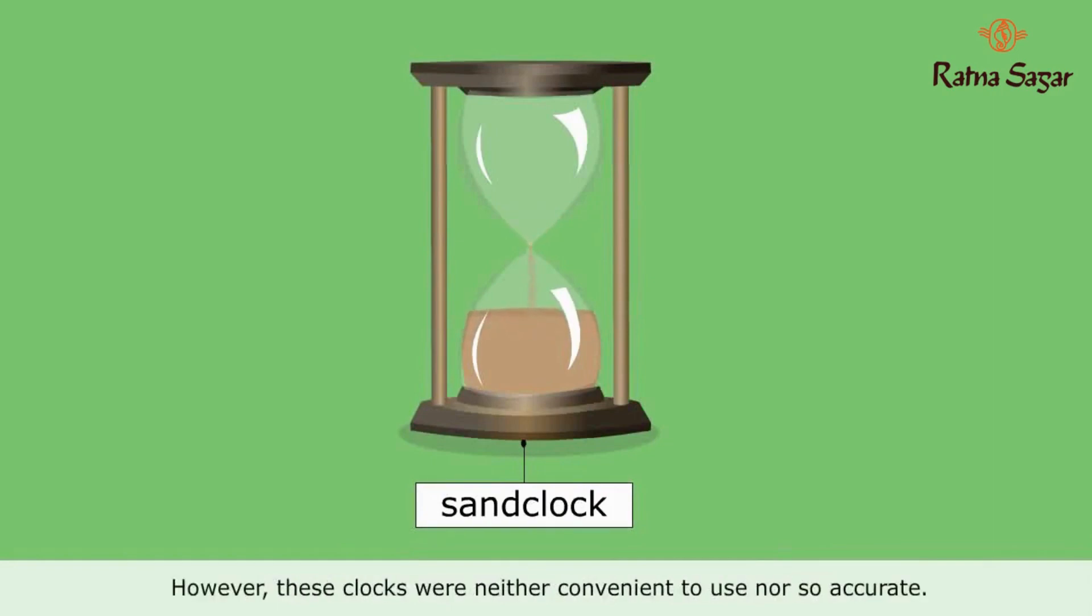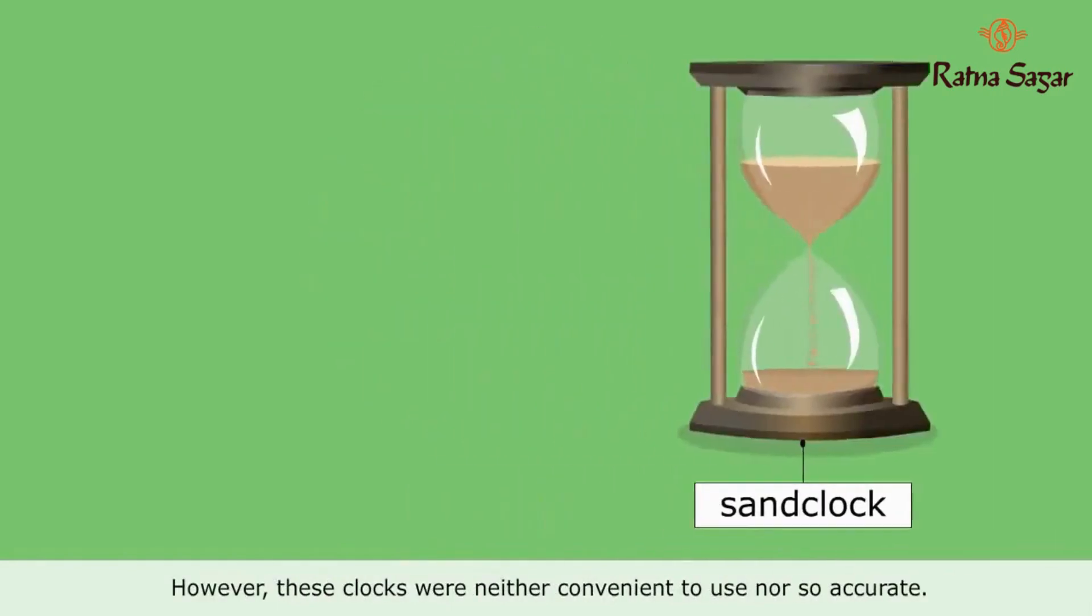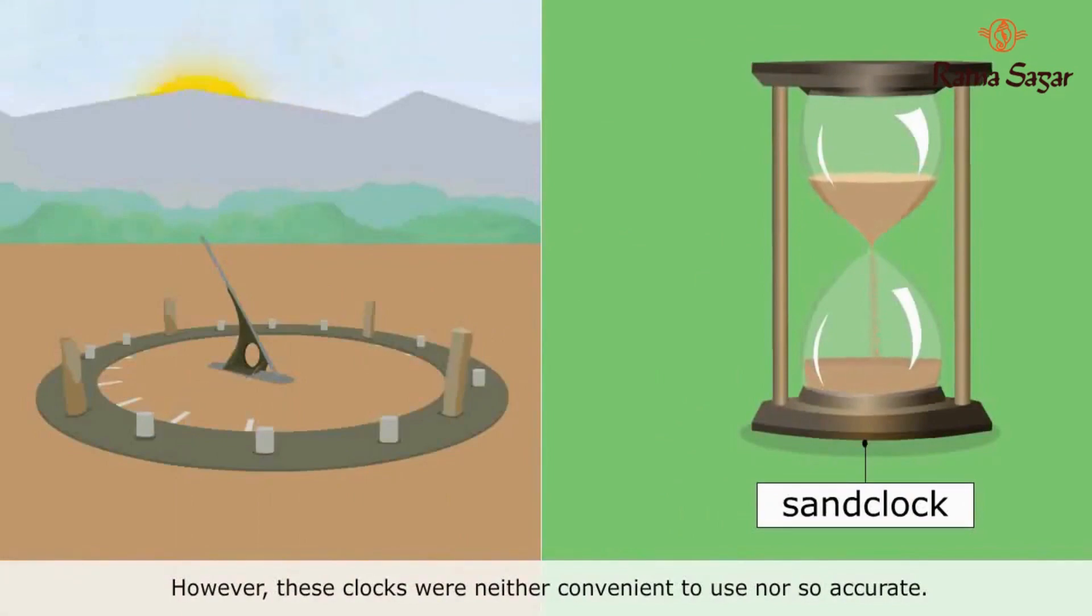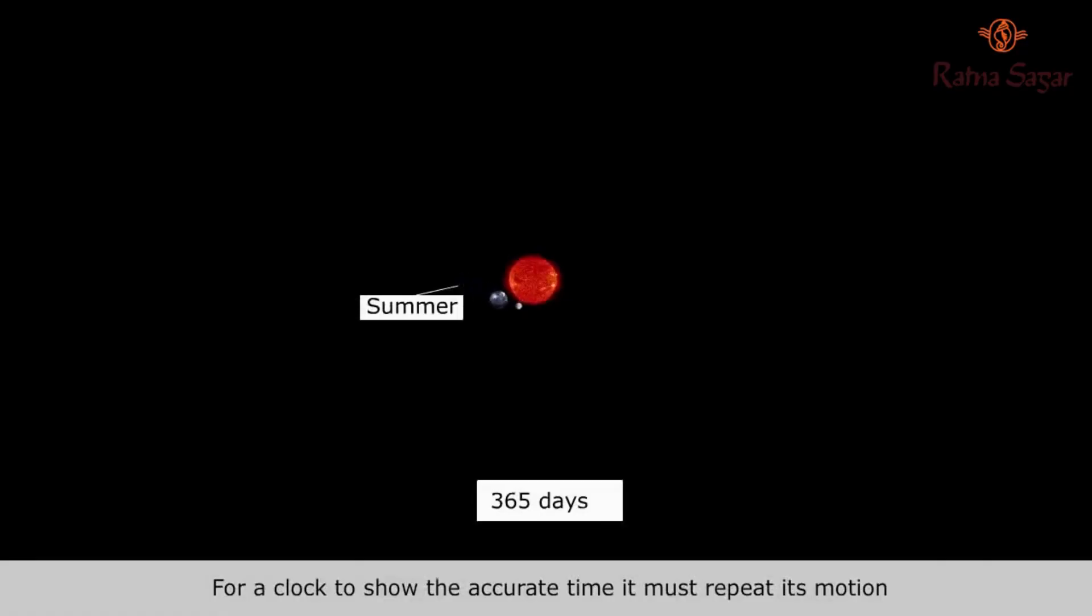However, these clocks were neither convenient to use nor so accurate. For a clock to show the accurate time, it must repeat its motion on its own with perfect regularity.